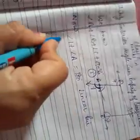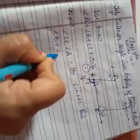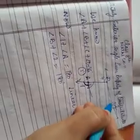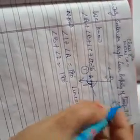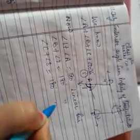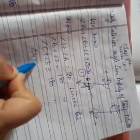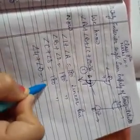Similarly, angle B and angle 2 sum to 180—it is also a linear pair. Angle C and angle 3 sum to 180, also a linear pair. And angle D and angle 4 sum to 180, also a linear pair.